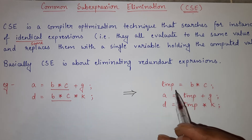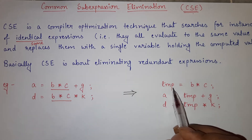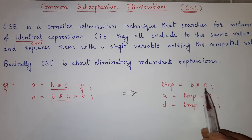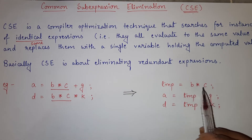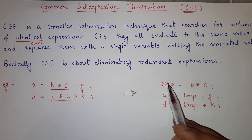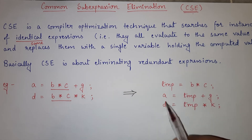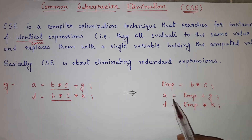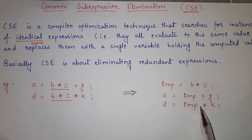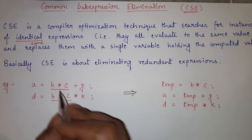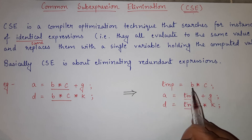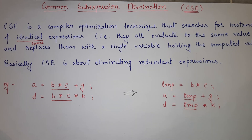So, with common sub-expression elimination, we eliminate B*C from these two equations. We take one temporary variable TMP and assign it the value B*C — that is, we multiply B with C and store the result in TMP. Then, in both equations, instead of B*C, we directly use TMP. So A = TMP + G and D = TMP * K. TMP is the variable in which the value of B*C is already stored.